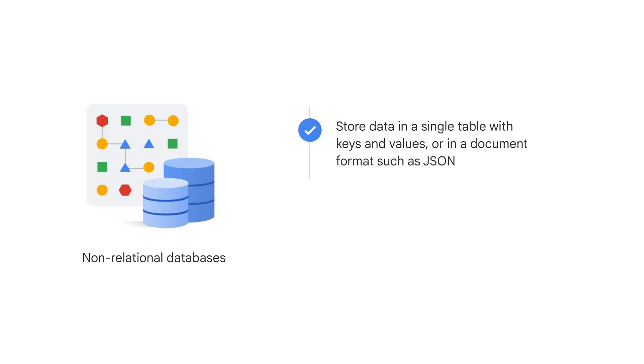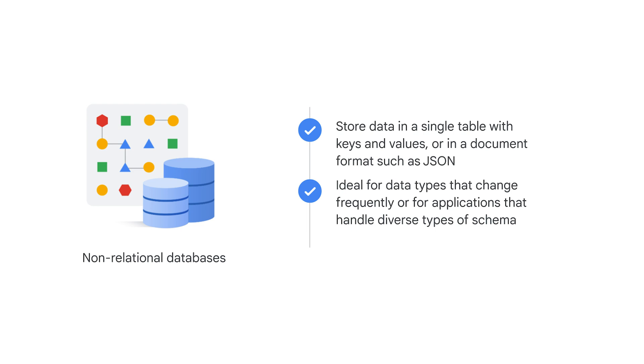Spanner is a fun one because while it's technically a relational database, some features behave like NoSQL databases. In contrast to relational databases, non-relational NoSQL databases typically store data in a single table with keys and values, or in a document format such as JSON. This makes them ideal for data types that change frequently or for applications that handle diverse types of schema. These databases prioritize flexibility over built-in data integrity enforcement, which means your application might need to handle the task of ensuring data consistency.